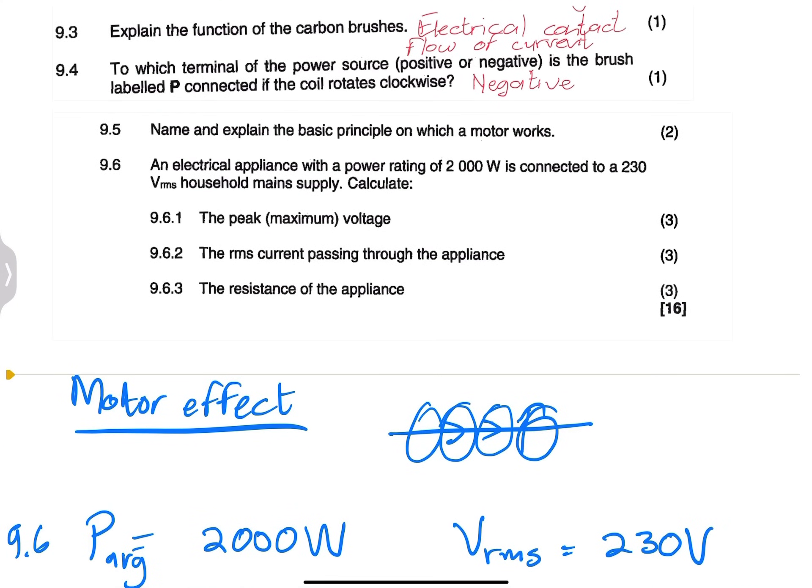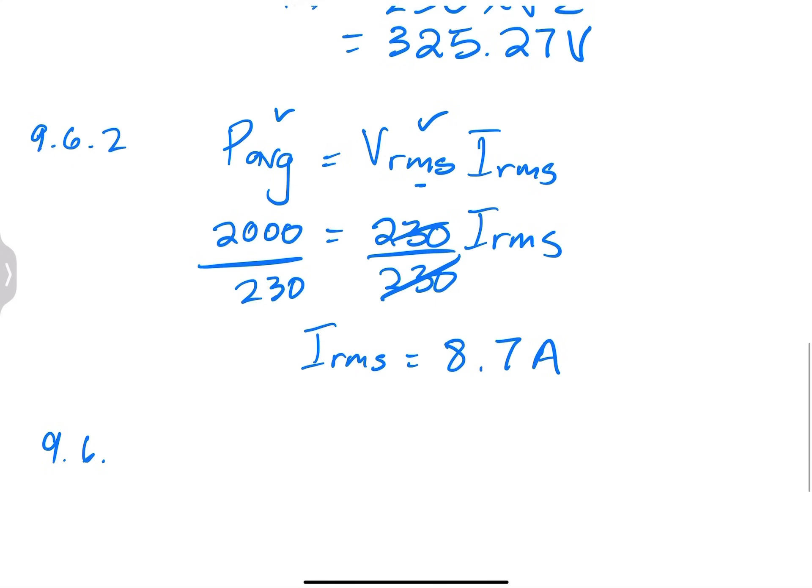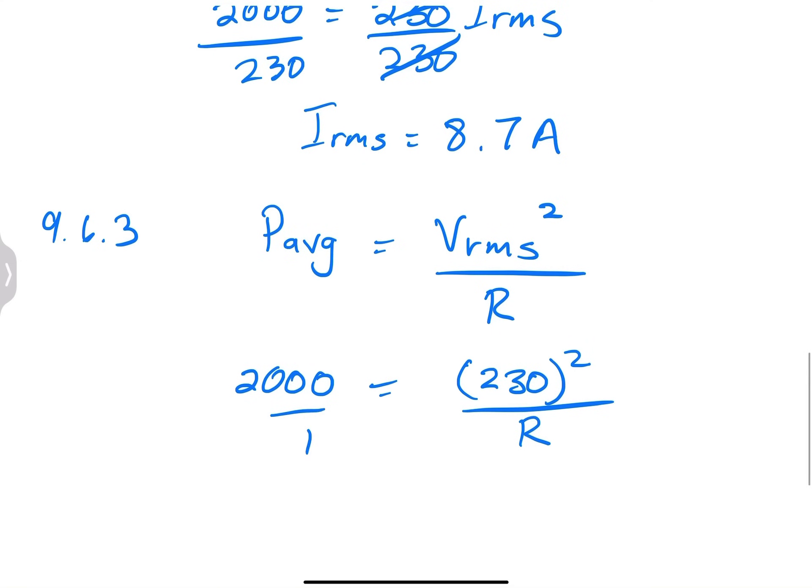So the last one, they say calculate the resistance of the appliance. So we can use the other power equation or formula. So I'm simply going to say, well, P_average, once again, is going to be, if you don't mind, I'm going to use the one with the RMS voltage, V_RMS squared over R. Nothing wrong with using I_RMS, the one that you've calculated. But I mean, just in case we did something wrong there. So I'm going to say this is 2000 is V_RMS squared. Remember, that's 230 that squared divided by R. So now we're going to cross multiply.